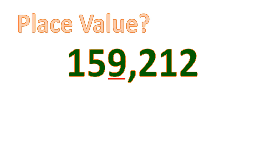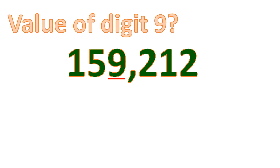Now let's try with a new number. We want to find the place value of digit nine. Its place value is the thousands place. Now, place value and value of a digit are two different terms asking for two different answers. For the value of digit nine, its value is nine thousand — because the digit is nine and it is in the thousands place.